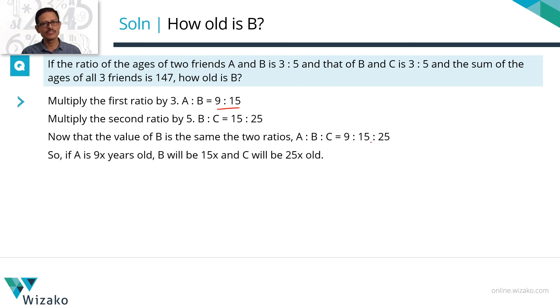So if A's age is 9x, B's will be 15x and C's will be 25x. Sum of their ages is equal to 147. 9x plus 15x plus 25x equals 147. 49x equals 147. X equals 3.